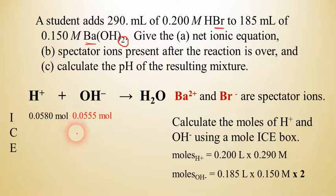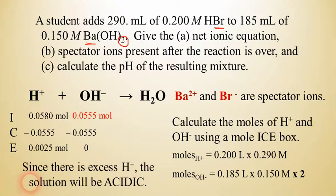So which one of these two is the limiting reactant? Hopefully you can see that there's less hydroxide. So that's going to run out first. So we're left with zero hydroxide and we have a little bit of hydrogen ion. It's about 0.0025 moles. And so since we have excess hydrogen ions, this is going to be an acidic solution.